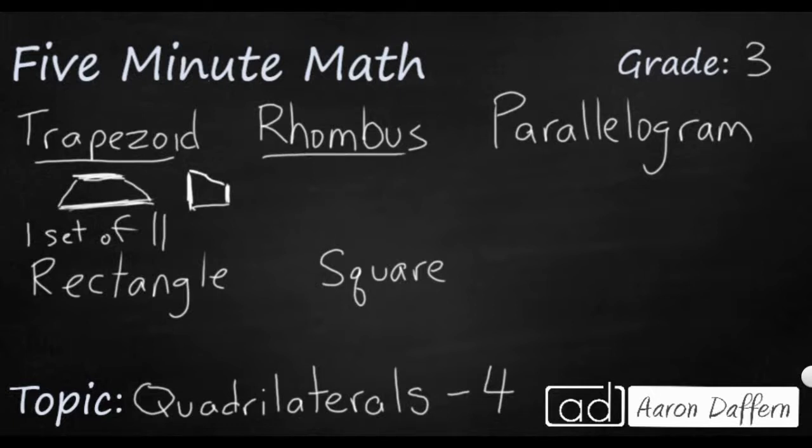Let's look at a rhombus. A rhombus, some of us might think of a rhombus as a diamond. We might call it a diamond, but the actual name is rhombus. It has two sets of parallel lines. So this one right here, and this one right here, and then the two opposite ones. And then it's got four equal sides.